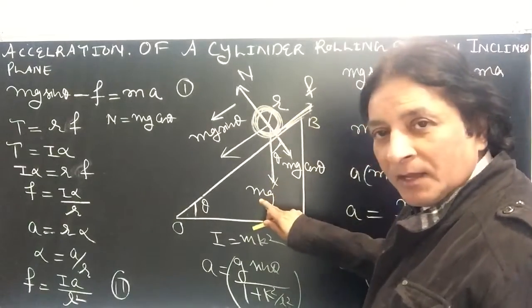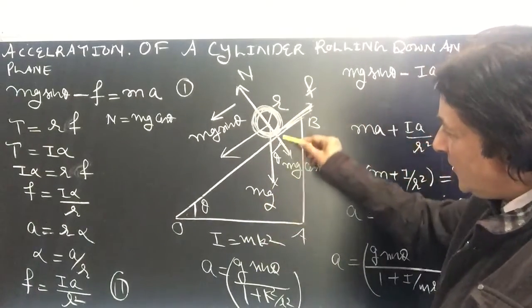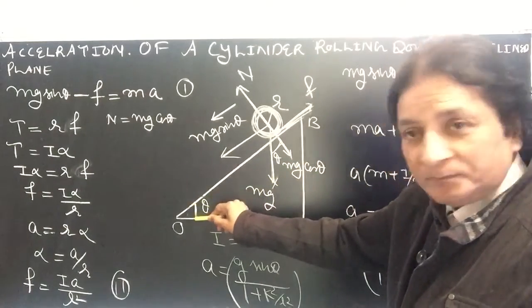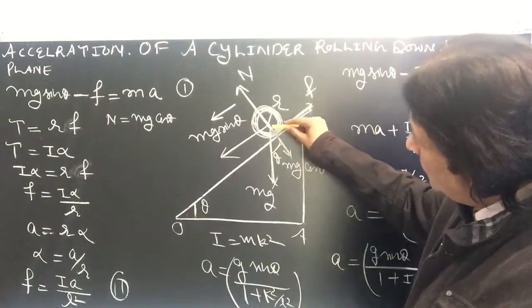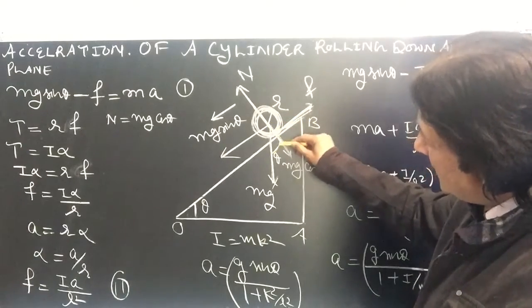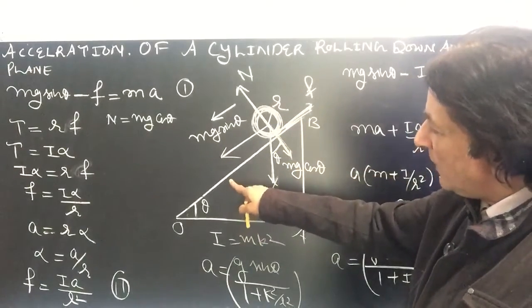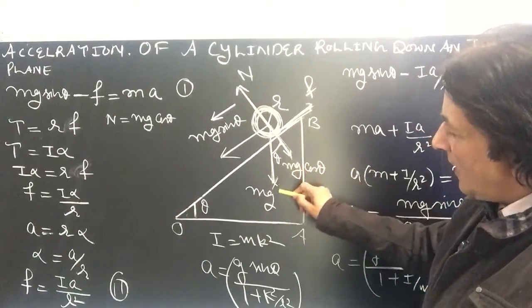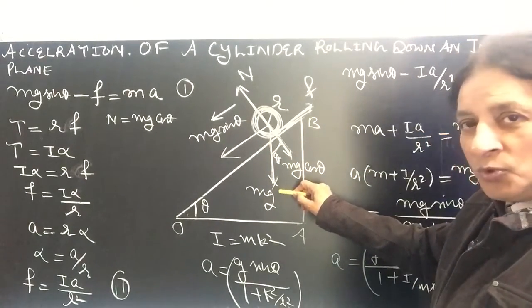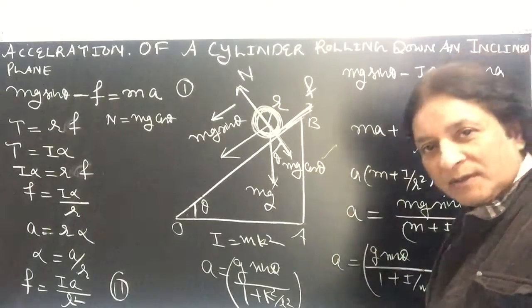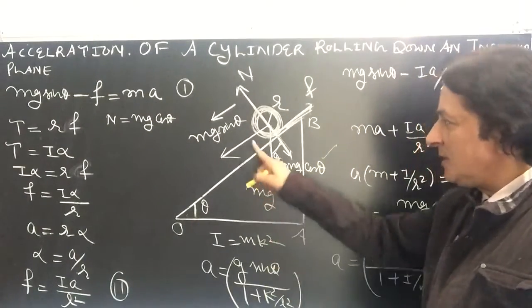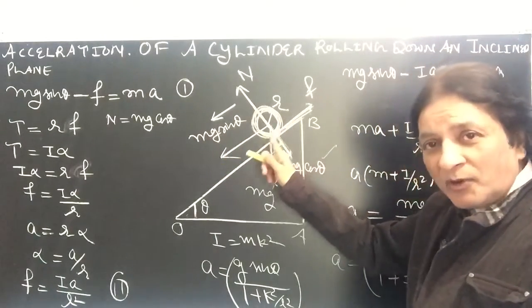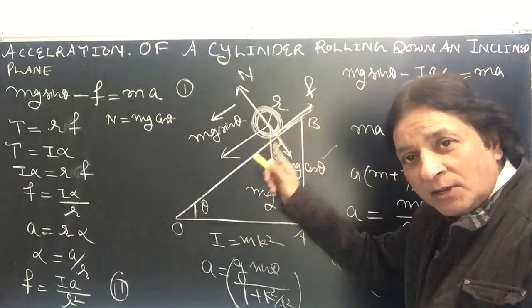The weight of the cylinder is mg. This angle is theta, and this angle will also be theta — as you know, the angle between the planes equals the angle between their normals. So mg can be resolved into two components: mg cos theta and mg sine theta. mg sine theta is responsible for the downward rolling motion of the cylinder.